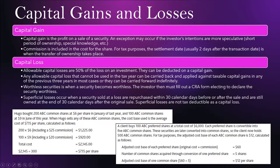Allowable capital losses are basically 50% of the loss on an investment, and they can be deducted against a capital gain. Any allowable capital loss that cannot be used in the tax year can be carried back and applied against taxable capital gains in any of the previous three years. In most cases they can also be carried forward indefinitely.